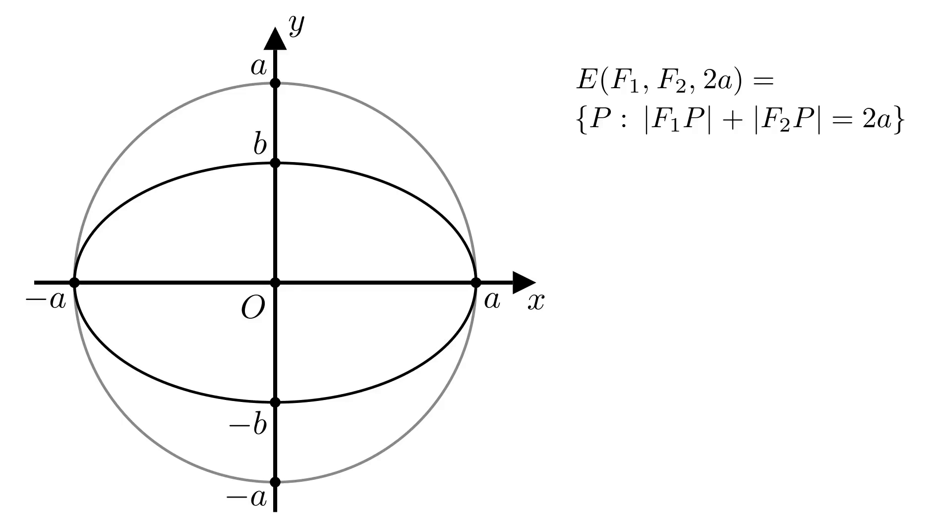When we defined an ellipse, we used focal points F1 and F2. Now we'll make an educated guess that they are somewhere on the x-axis, symmetric with respect to O. Let's call a point on the shrunken circle P. And if our shrunken circle is also an ellipse, then |F1P| plus |F2P| must be equal to 2a.